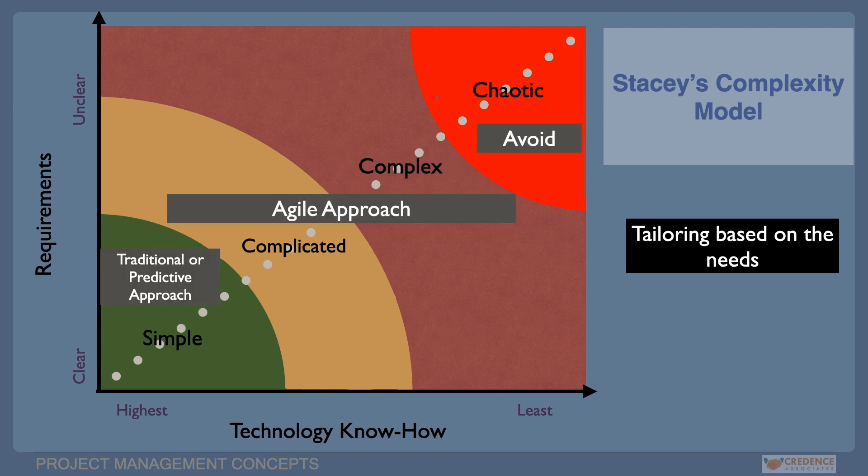We have seen Stacey Matrix in the context of development approach on the basis of what and how. When the project requirements are clear and technology is known, complexity is simple and traditional approach can be followed. If the requirements and technology are both unknown, this becomes chaotic and usually such projects are either avoided or converted to become complicated or complex. If the projects fall in the category of either complicated or complex agile methodologies, with or without tailoring can be applied.